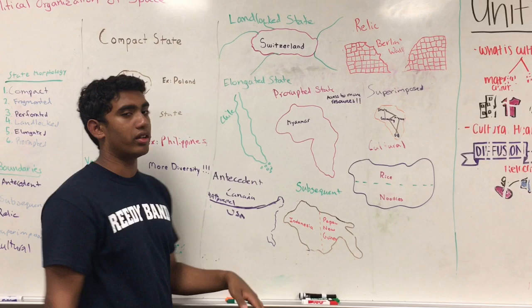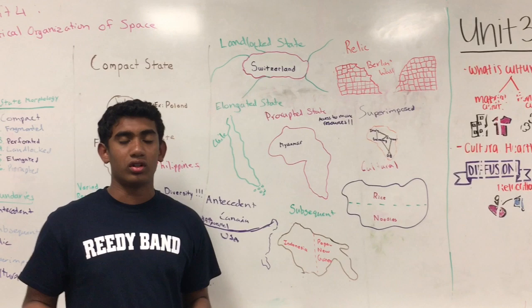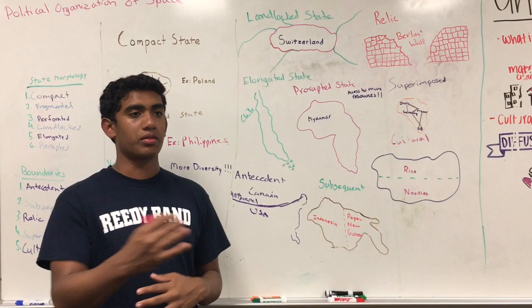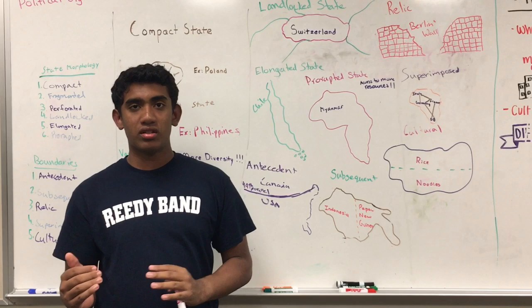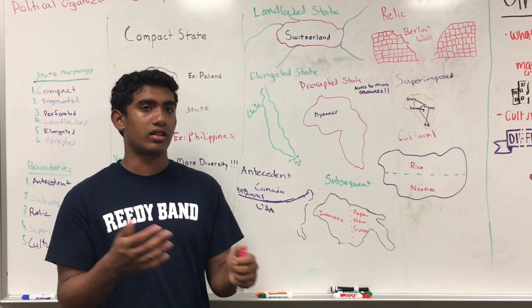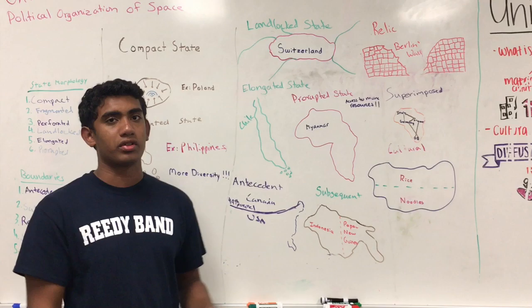For the elongated state, the main challenge is government control and communication, because since it's so long it's hard for the government to communicate with each region. The next state would be a prorupted state — an example would be Myanmar. Basically, a prorupted state is a compact state with a huge extension, and this is mostly done for resources. If a state is landlocked, they might want a proruption to get access to water or an ocean to get resources and trade.